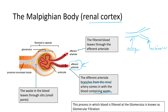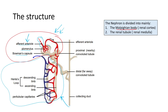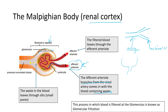The blood moves into a cup-shaped structure known as the Bowman's capsule. The Bowman's capsule is this cup-like structure, and inside it we find the glomerulus. The glomerulus is this part here — a coiled structure that looks somewhat like a snake.